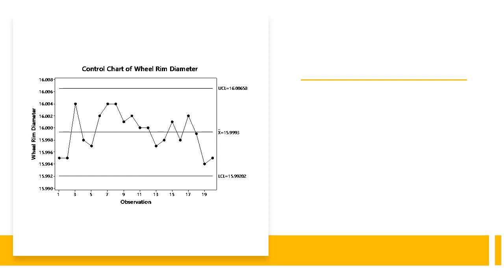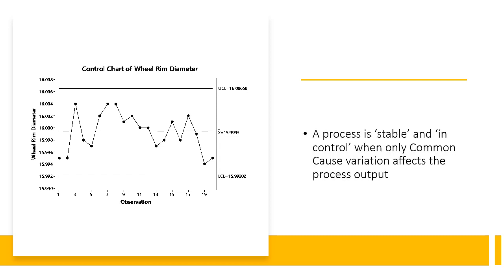A stable process is one in which the causes of variation are consistent over time. The wheel rim diameter measurement can vary due to materials, operators, or any variable that naturally occurs in the process. We call this common cause variation.